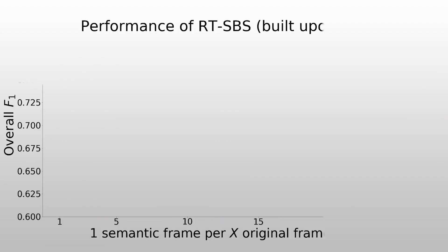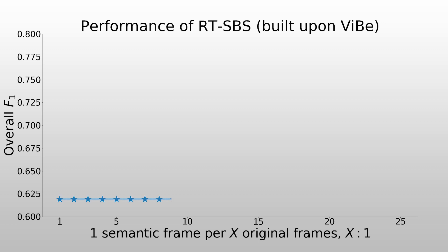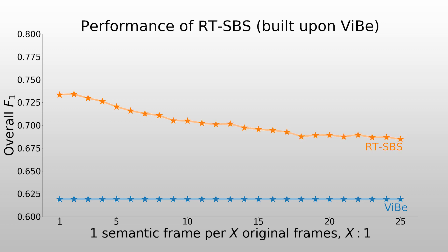Let's start with the performance of the original ViBe algorithm. It has an F1 score of about 0.62, independently of the frame rate of the semantic information, as it does not use it. Now let's take a look at the performance of our method. The performances are well above those of ViBe and they drop very slowly as the semantic frame rate is reduced. The performances at x equals 1 correspond to the semantic background subtraction method when semantics is available for each frame.